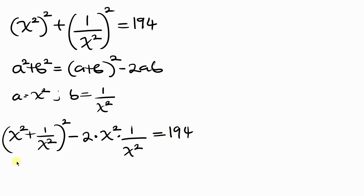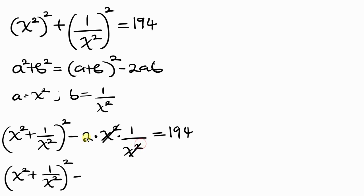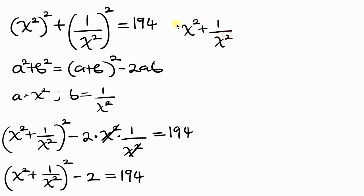Simplifying further, x squared times 1 over x squared cancels, leaving x squared plus 1 over x squared, all raised to the power of 2, minus 2, equal to 194. Moving negative 2 to the right-hand side, it becomes plus 2, giving us x squared plus 1 over x squared, all raised to the power of 2, equal to 194 plus 2, which is 196.